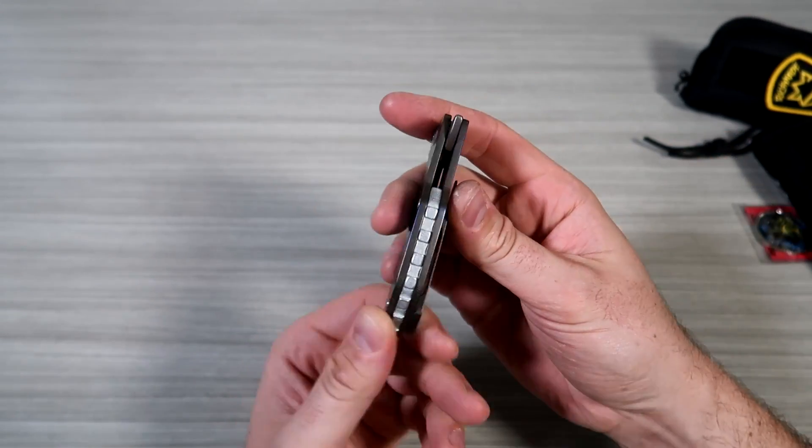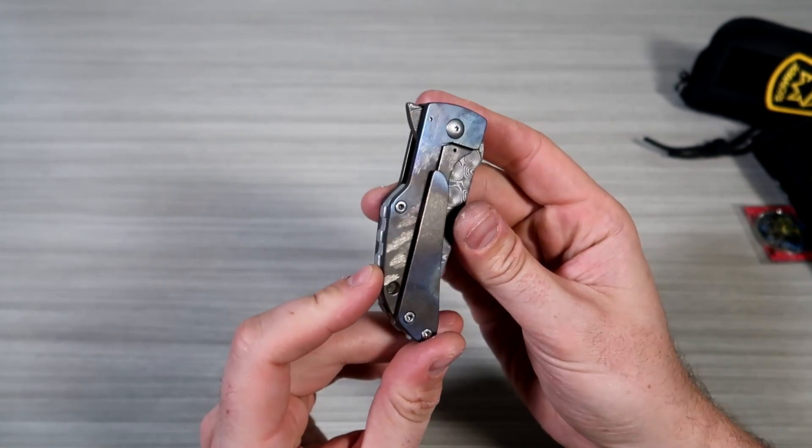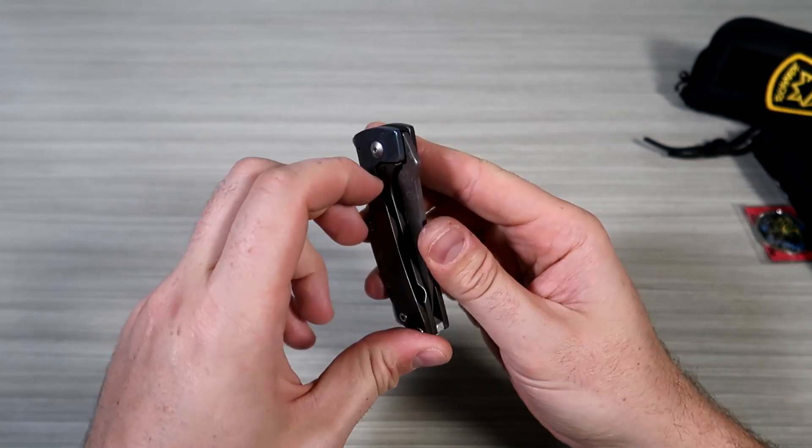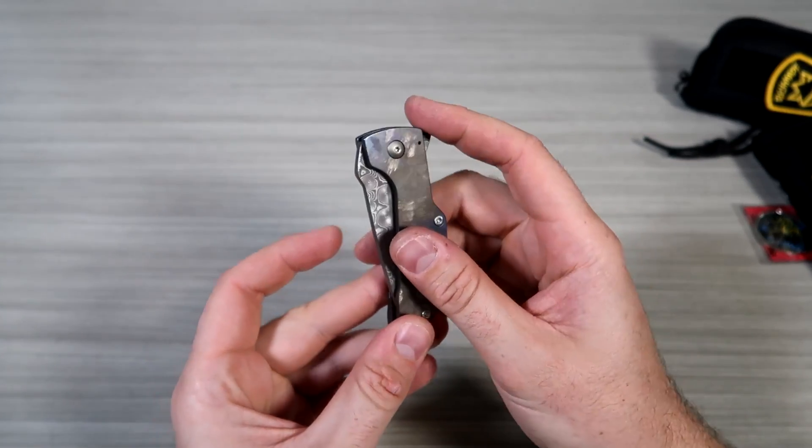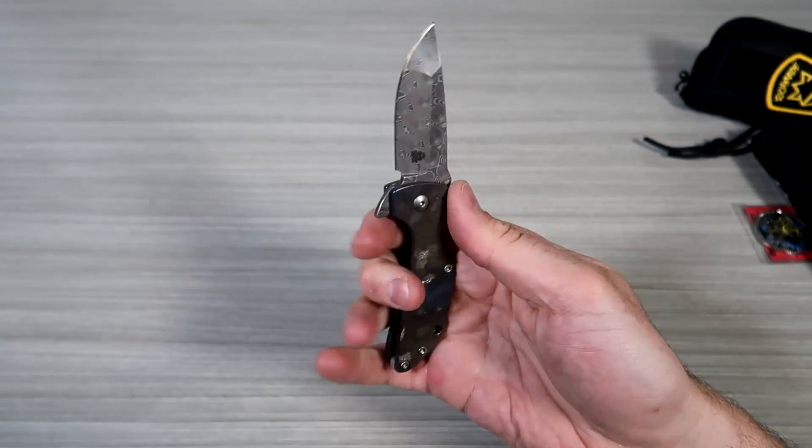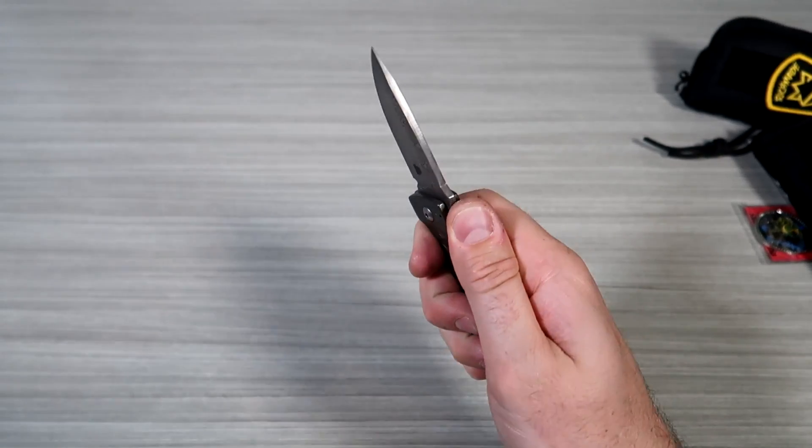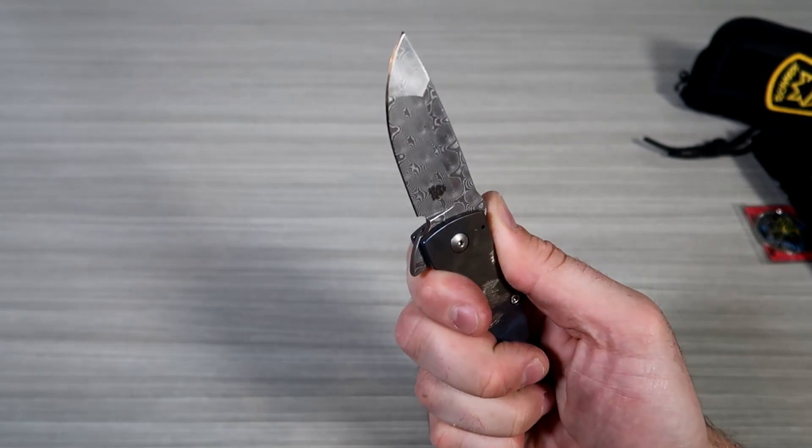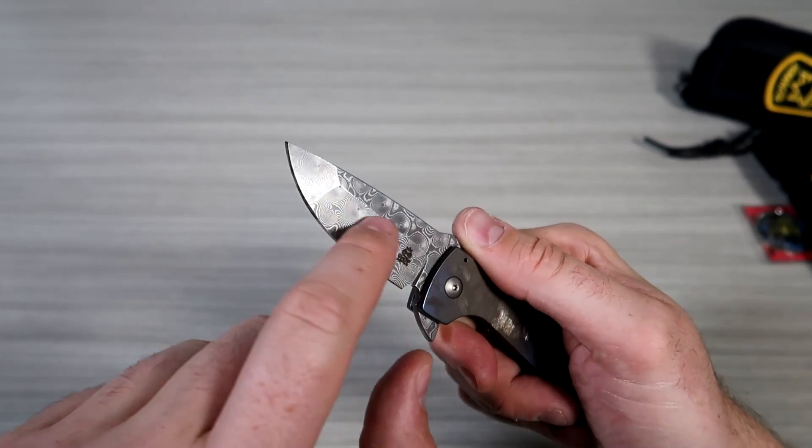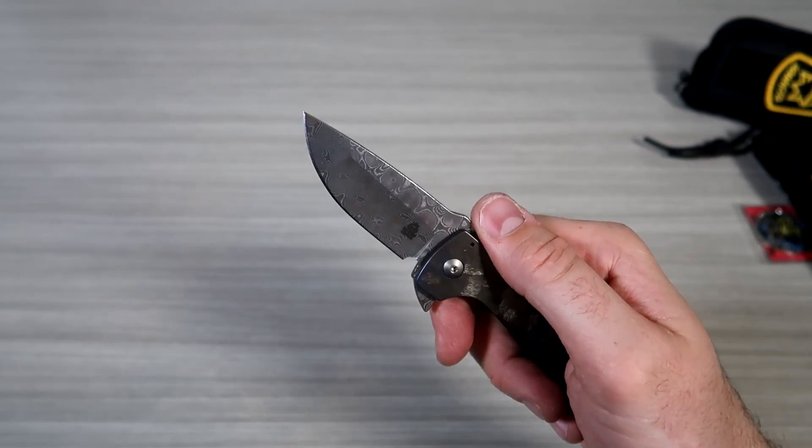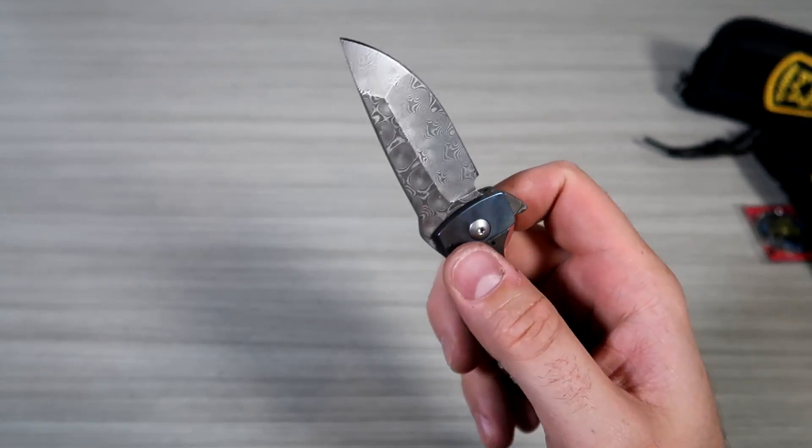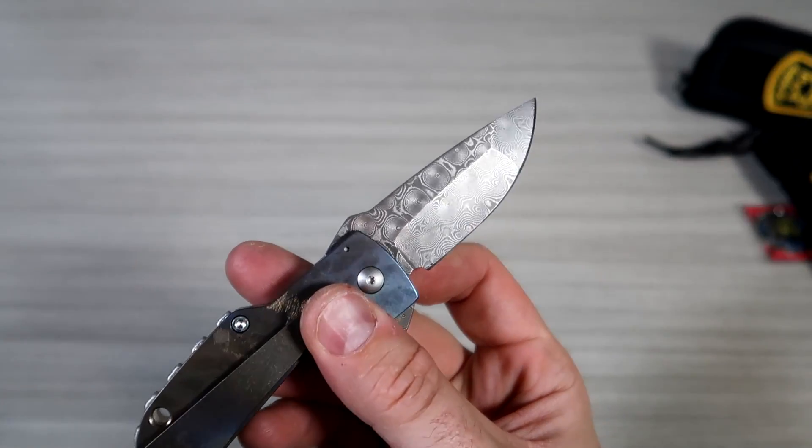Look at that, piece of art. Nice clip. Flipper, oh yeah, it flicks out really well. So this is like everyday carry pocket knife. I really like the pattern of this Damascus steel. You see that pattern? Beautiful.